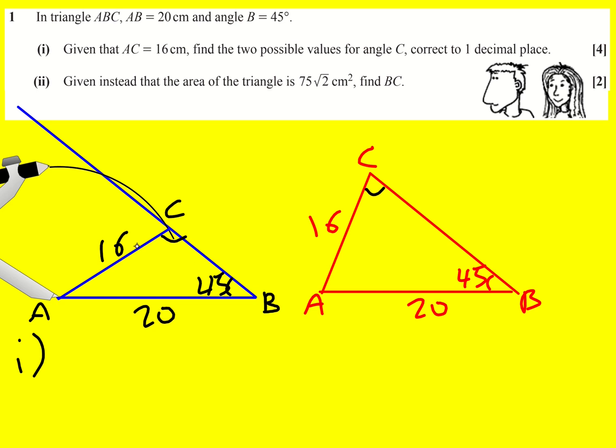So what we have here is we have opposite pairs that we know and then we've got opposite pairs but one that we don't know. This is shouting out for the sine rule.